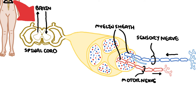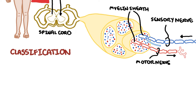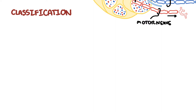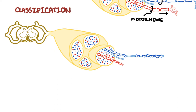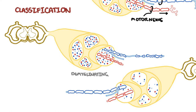Charcot-Marie-Tooth disease is an inherited familial disorder with many gene mutations identified. Clinically, however, we will focus on five important ones. In each of these cases, it is usually either predominantly a demyelinating issue — loss of myelin — or an axonal loss picture.